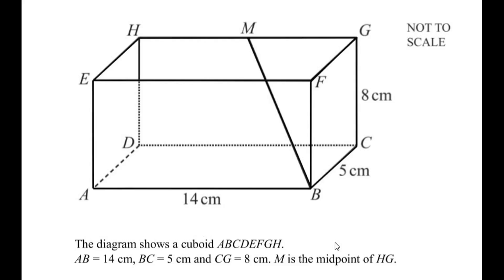Hello and welcome to my channel. In this video we are going to solve an example from trigonometry. This question has two sub-questions. The diagram shows a cuboid ABCDEFGH, where AB is given as 14 cm, BC as 5 cm, and CG as 8 cm. M is the midpoint of HG.